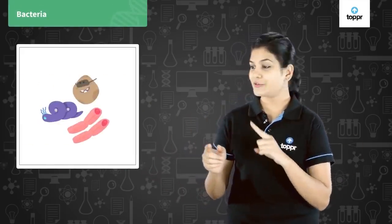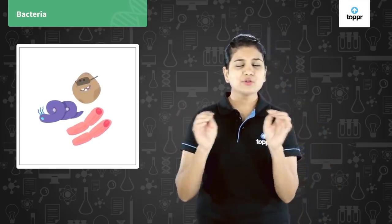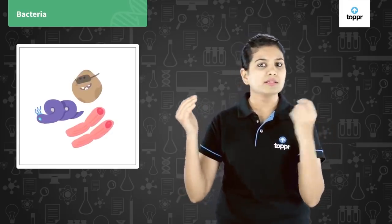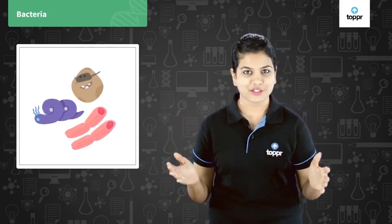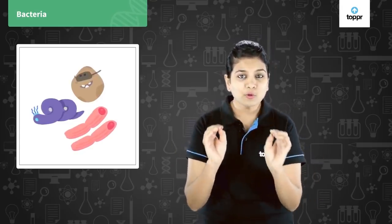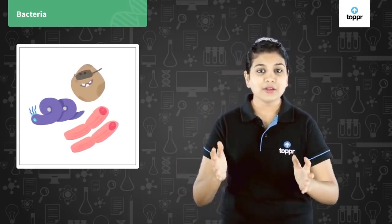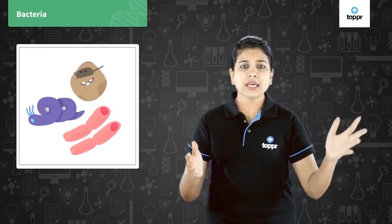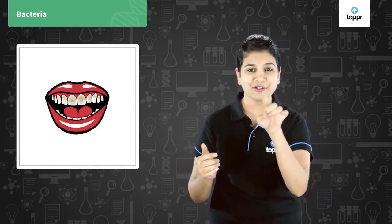Let us start with the first one: bacteria. Bacteria are single-celled tiny organisms which can be either spiral-shaped, rod-shaped, or comma-shaped. They are just a few micrometers in size, and they are present everywhere around you — in the air, water, soil, and even in your mouth.